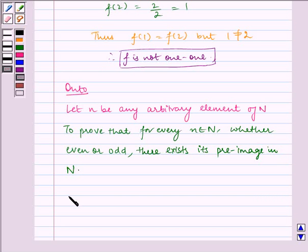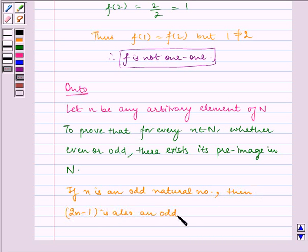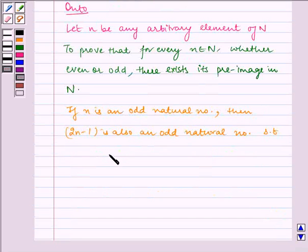If n is an odd natural number, then (2n-1) is also an odd natural number such that f(2n-1), which equals putting (2n-1) in our given function, we get (2n-1+1)/2, which equals n.